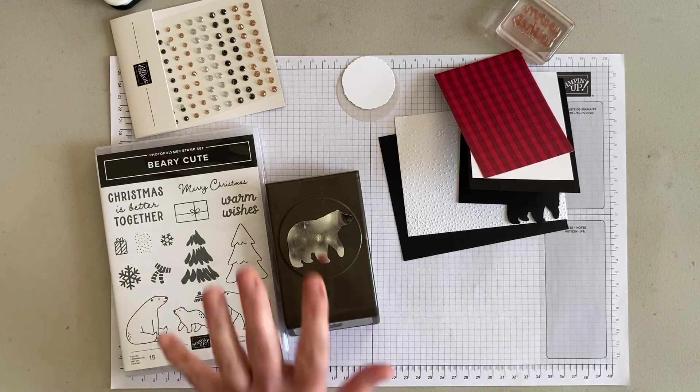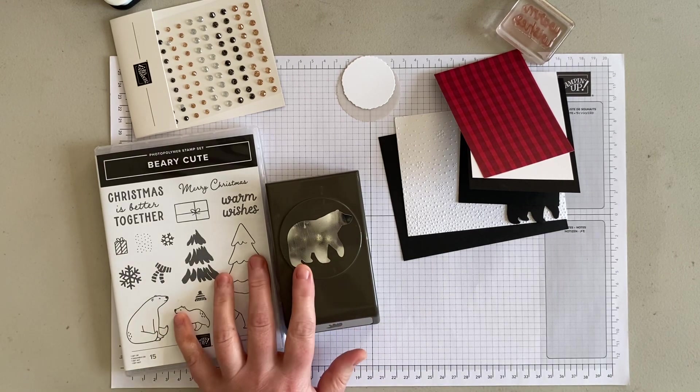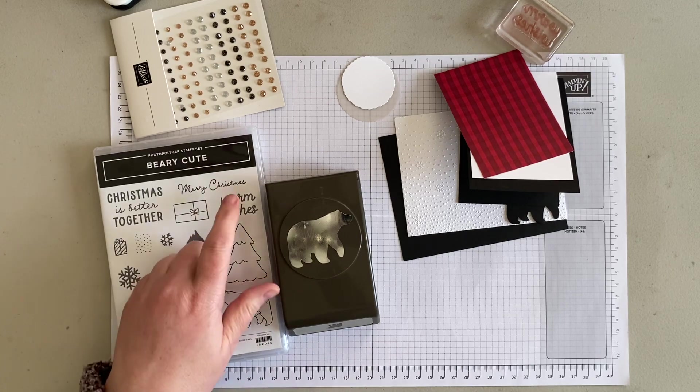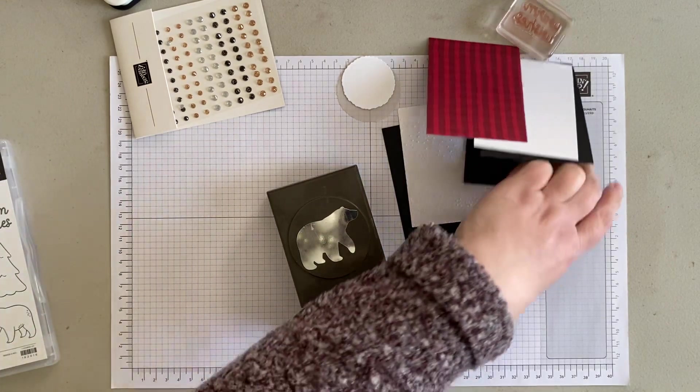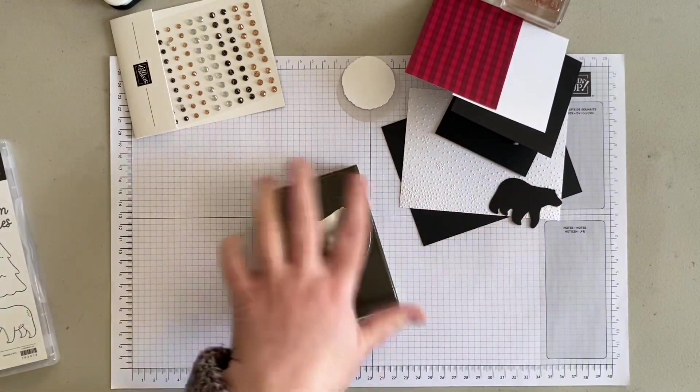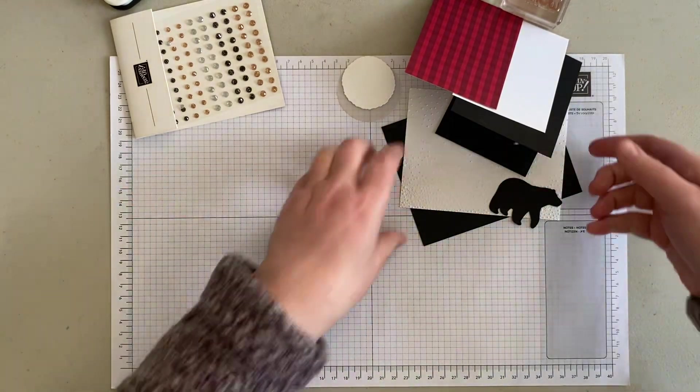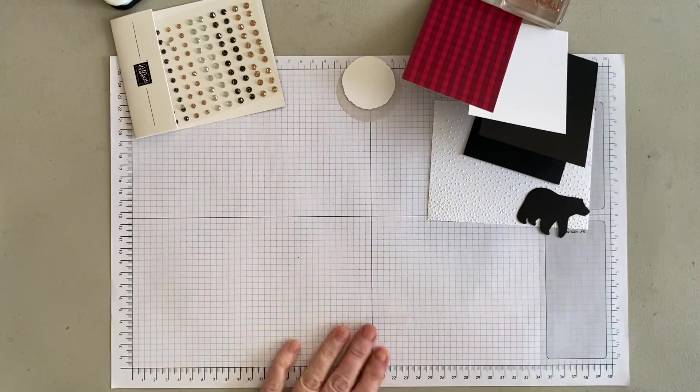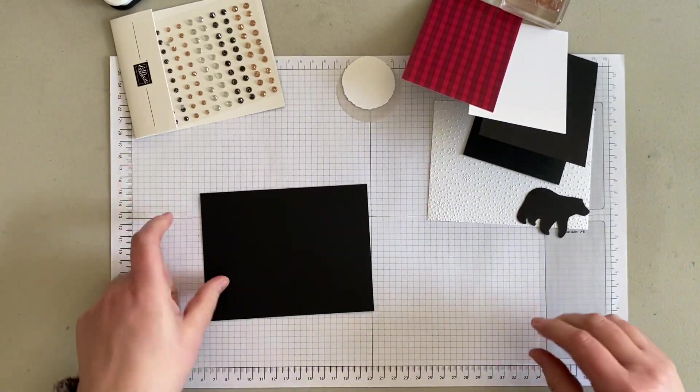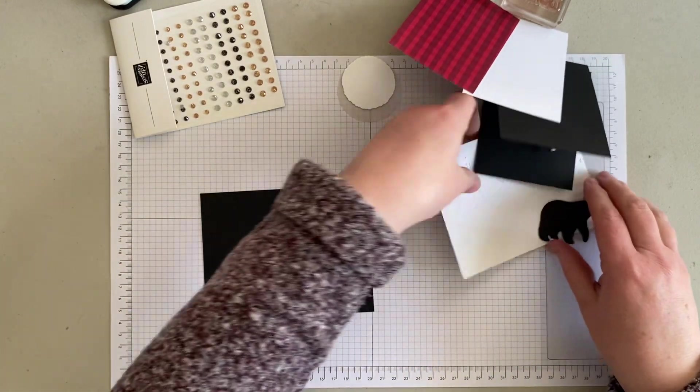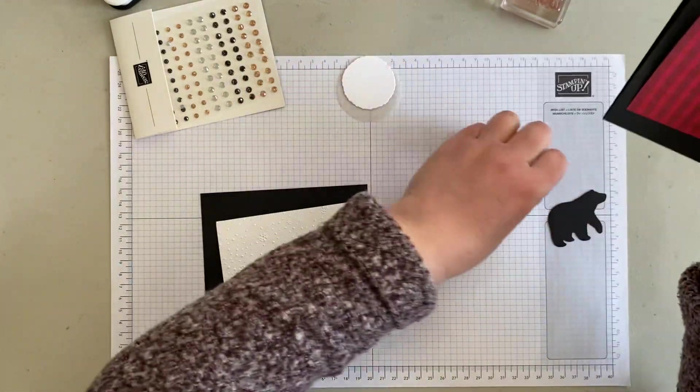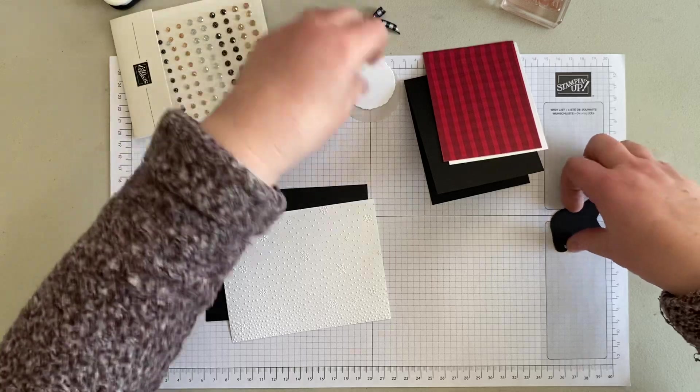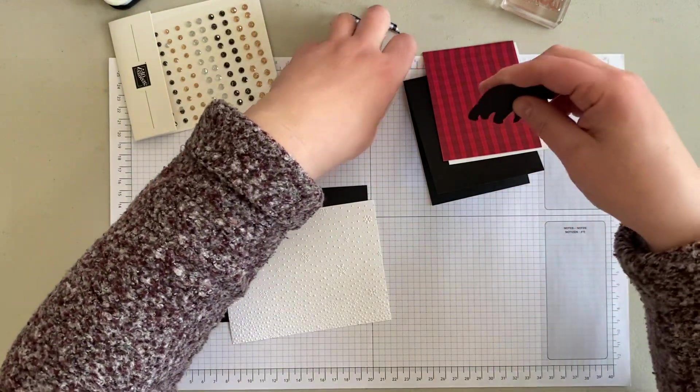It uses the berry cute bundle. I've already gone ahead and mounted the warm wishes sentiment that we'll be using, and I've already punched out the bear in black. I will put the measurements for these pieces up in the description, so I'm not going to give them out verbally because I didn't pre-measure.